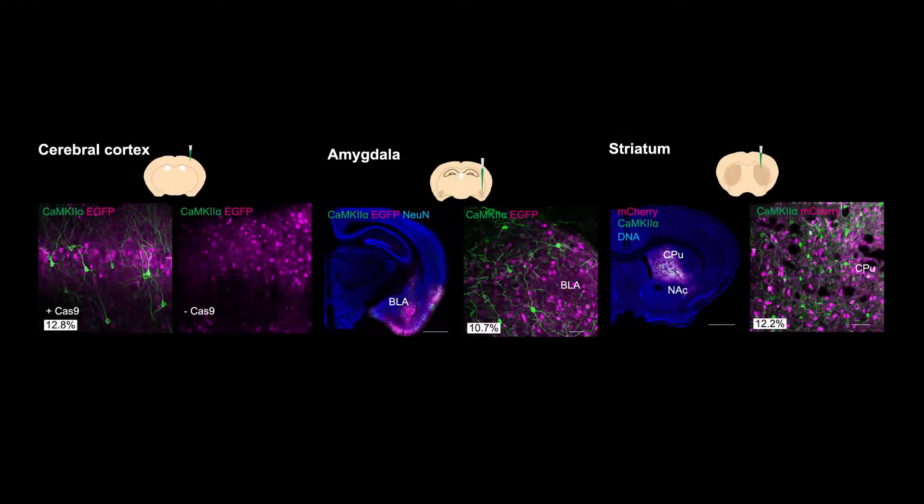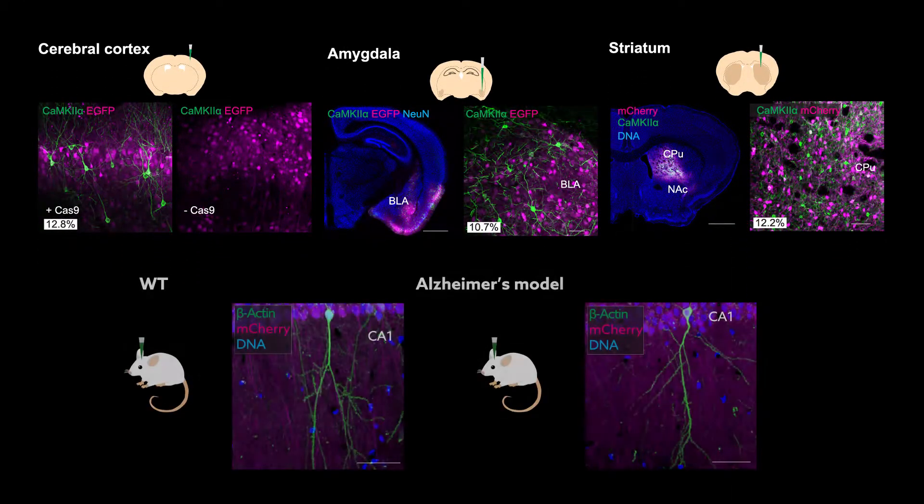Finally, the team tested the dual-viral system in living mice, including an aged Alzheimer's disease mouse model, by directly injecting AAVs into the brain.